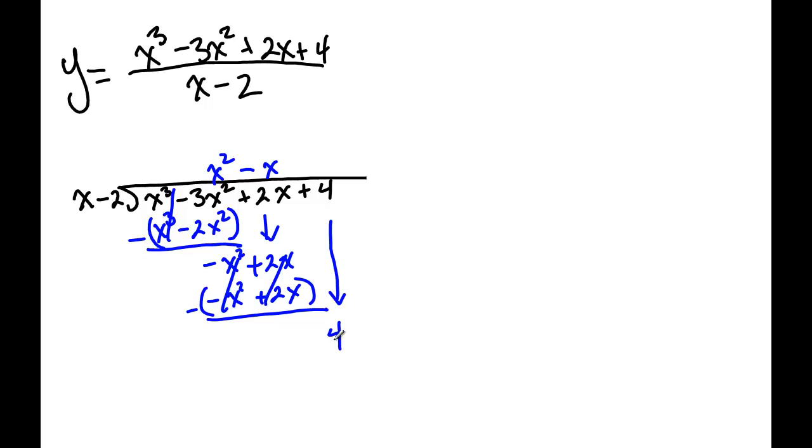So we bring down the 4, and you ask yourself what do I need to multiply x by to get 4? Well you can't do it without doing some sort of strange division, so this is our actual remainder here.